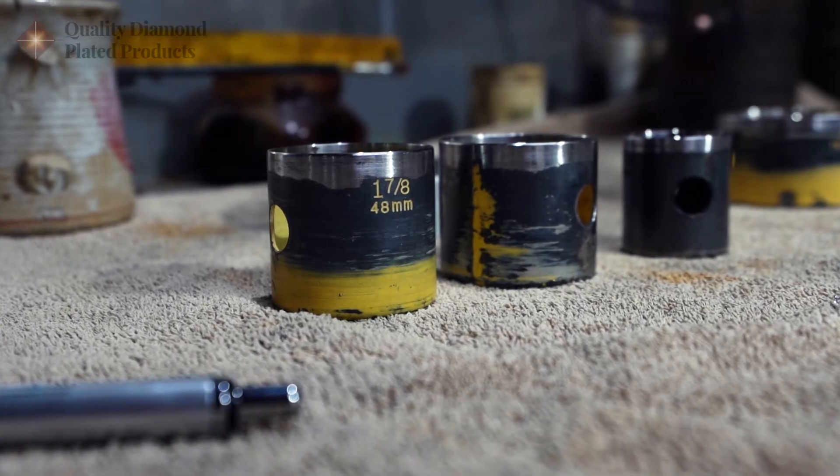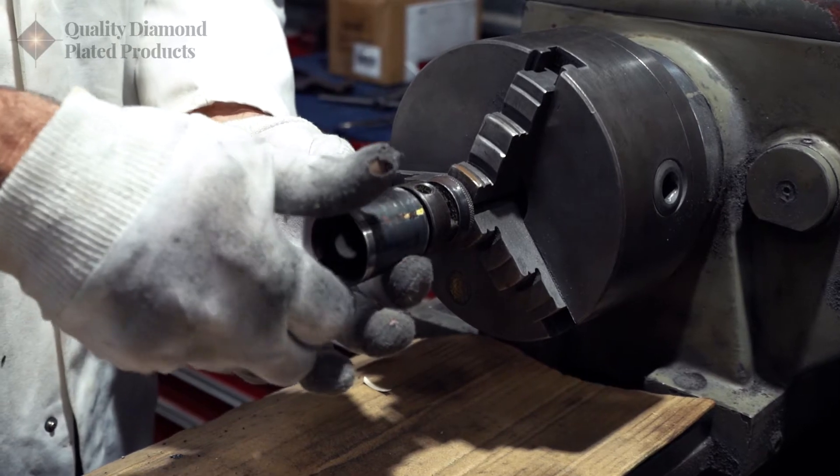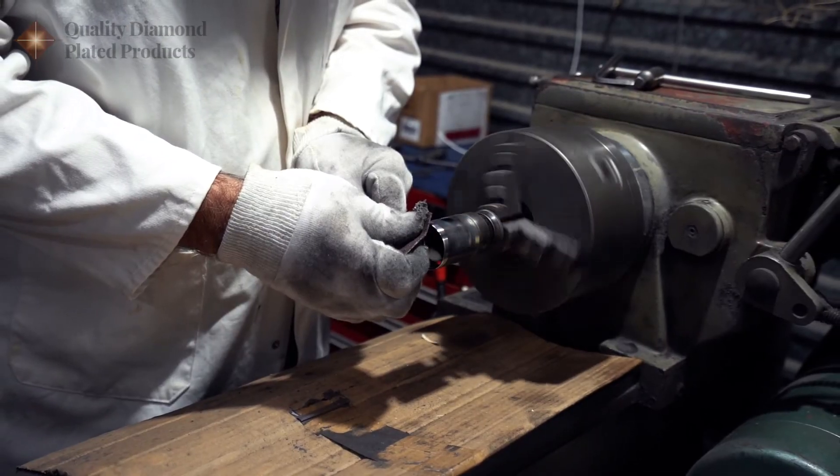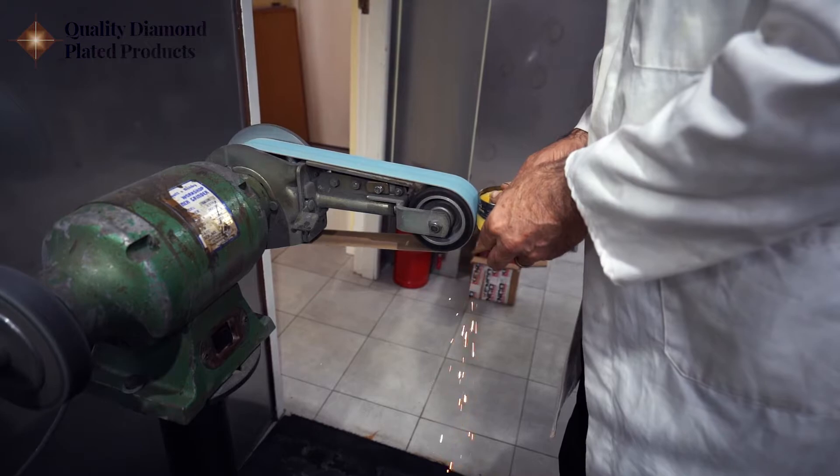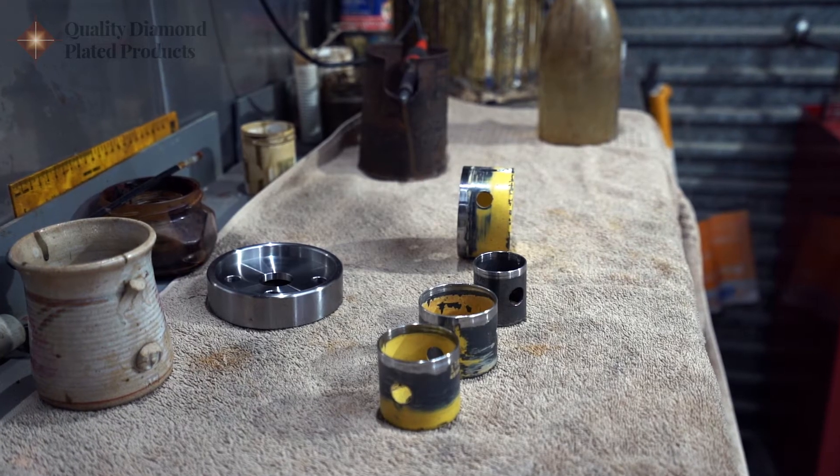The process begins with the mechanical preparation of the component either by polishing or grinding to remove damage and corroded areas to start with a clean metal surface.